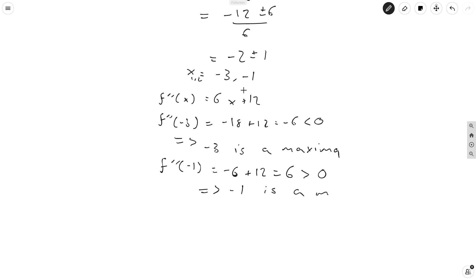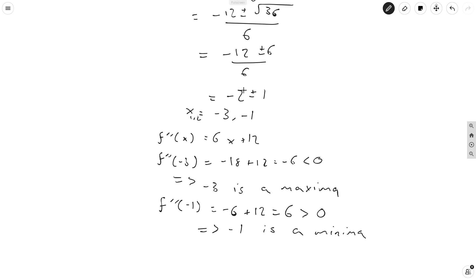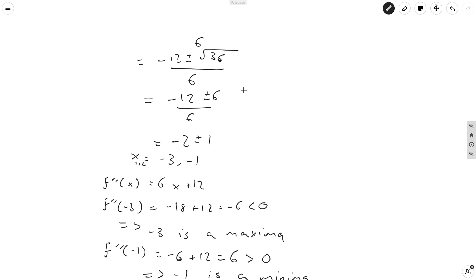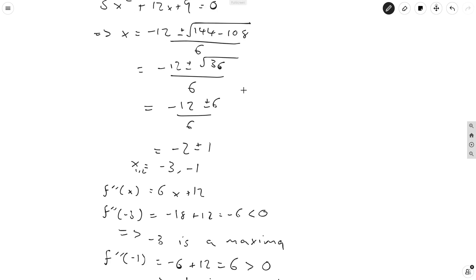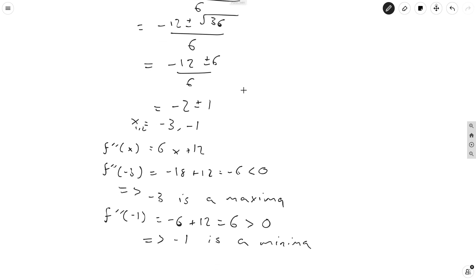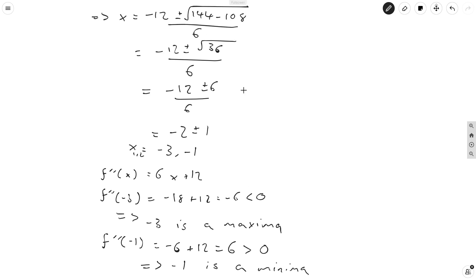Since the second derivative is positive, this implies minus 1 is a minima, because whenever our second derivative is positive that corresponds to a minimum point. So now we've found all our critical points and classified our maxima and minimum.